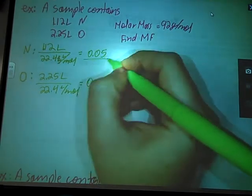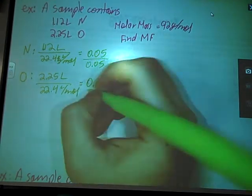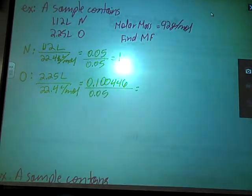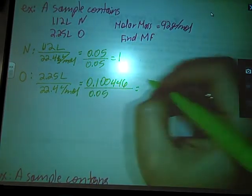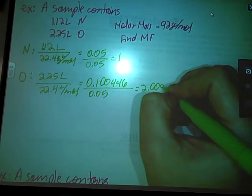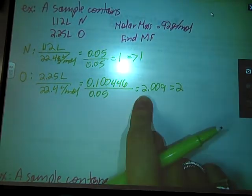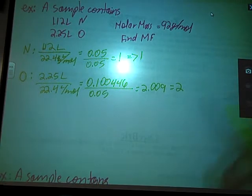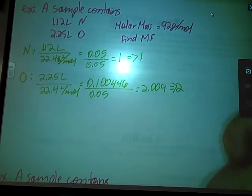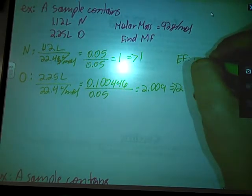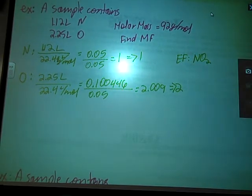Divide by the smallest. This one is, in fact, smaller. So, this one gives me 2.009. After this step, we round reasonably. This one worked out well because this is so close to 2 that I can round without much ado. So, my empirical formula for this compound is, in fact, NO2.